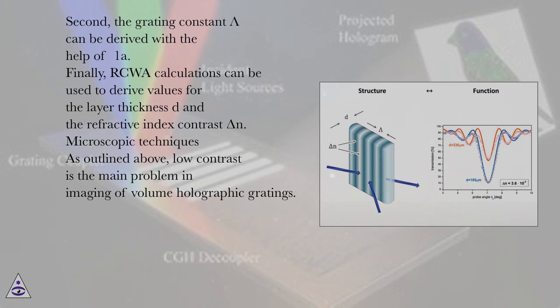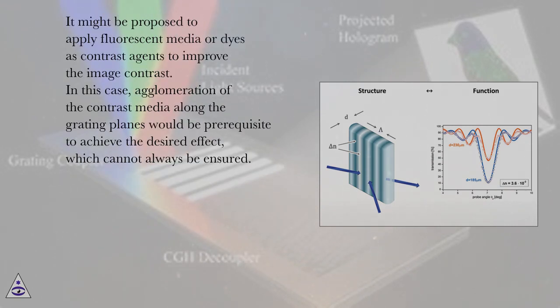Microscopic Techniques: As outlined above, low contrast is the main problem in imaging of volume holographic gratings. It might be proposed to apply fluorescent media or dyes as contrast agents to improve the image contrast.